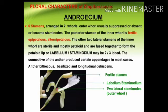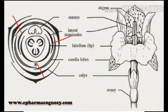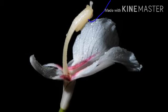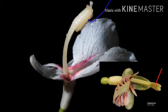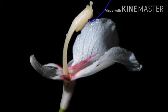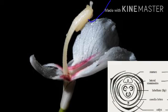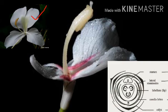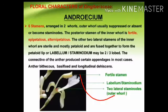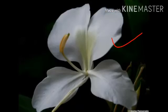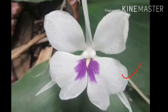The androecium consists of six stamens arranged in two whorls. The outer whorl is usually suppressed or absent, or becomes staminoids. The posterior stamen of the inner whorl is the only fertile stamen, which is epipetalous and antipetalous — so only one fertile stamen is present, positioned posteriorly. The other two lateral stamens of the inner whorl are sterile, mostly petaloid, and fused together to form a petaloid lip called the labellum or staminodeum. This structure is often confused with a petal, but it is actually a stamen — the attractive part of the flower.